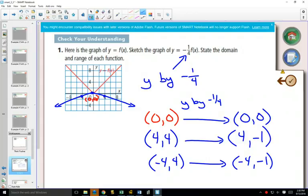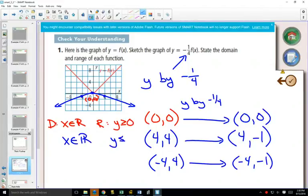State the domain and range of each function. So for our red graph, the domain is everything, the range is y is bigger than or equal to 0. And for our blue graph, the domain is still everything, but now our range is less than or equal to 0.